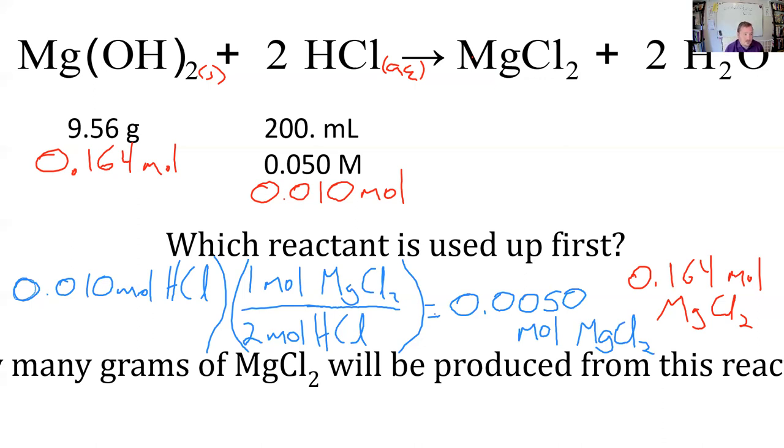So looking at those two numbers, the smallest number is the one that we got from HCl, which makes sense because we have 10 times more magnesium hydroxide in terms of moles, and we're using up the HCl faster because it's a two-to-one ratio.